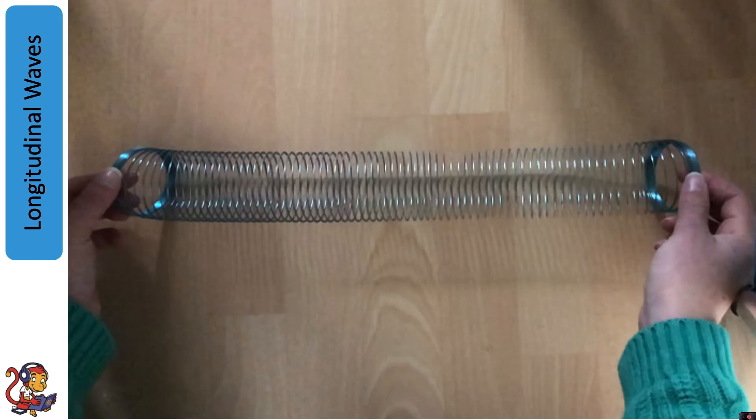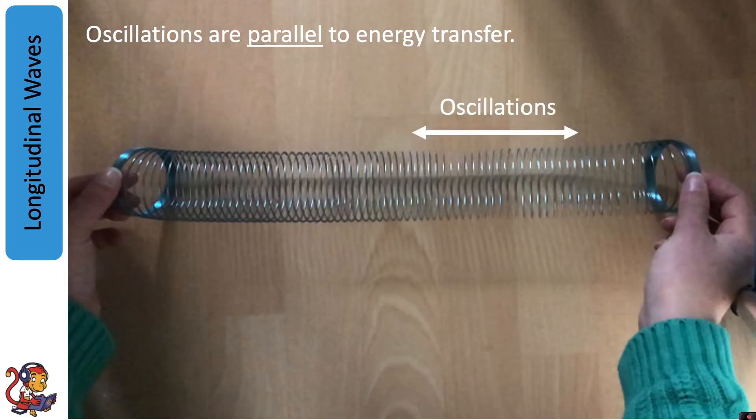So if I were to produce longitudinal waves in this slinky the oscillations would have to be parallel to the energy transfer. So if I oscillate, which means move back and forth, the slinky in a sideways direction, the energy transfer would be parallel to this.